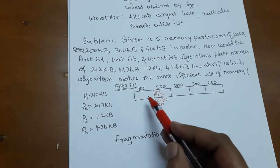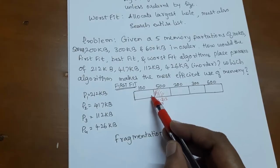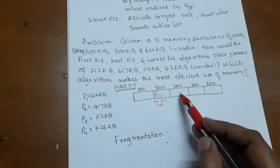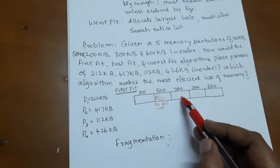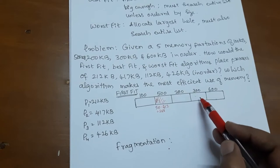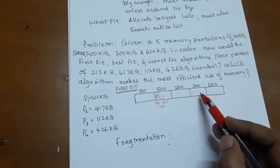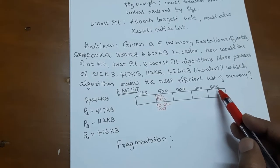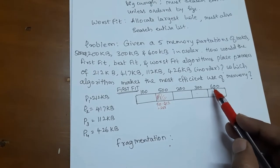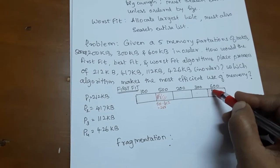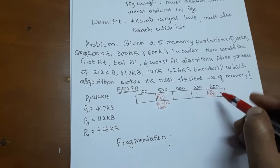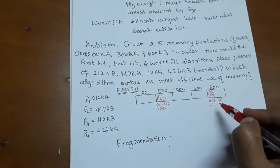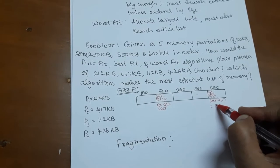The next incoming process is P2 of size 417 KB. It will not fit into the 288 KB leftover. The second partition is already allocated, the third partition of size 200 KB will not fit P2, and 300 KB is also not enough. So P2 is allocated to the block of size 600 KB, creating a small hole of size 600 minus 417, equal to 183 KB.